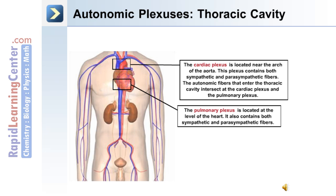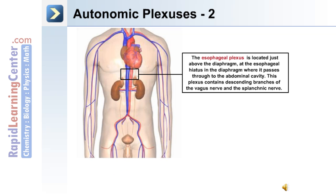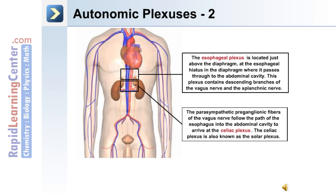The pulmonary plexus is located at the level of the heart and also contains both sympathetic and parasympathetic fibers. The esophageal plexus is located just above the diaphragm at the esophageal hiatus, where it passes through to the abdominal cavity. This plexus contains descending branches of the vagus nerve and the splanchnic nerve.